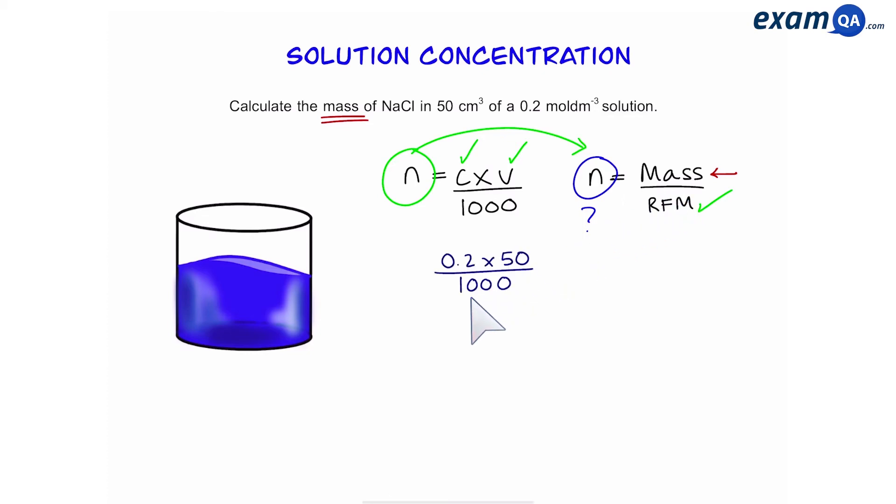So concentration 0.2, volume 50 divided by thousand gives us 0.01 moles. As for the relative formula mass, we can simply add the mass of sodium with chlorine and that will give us 58.5.